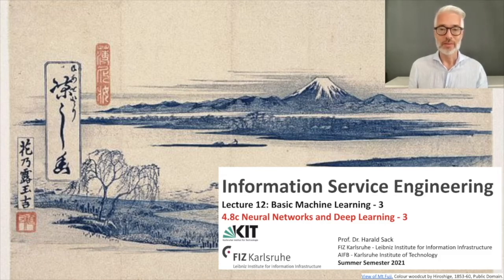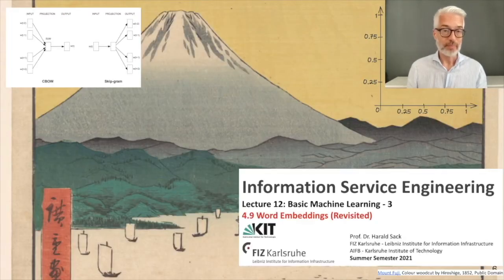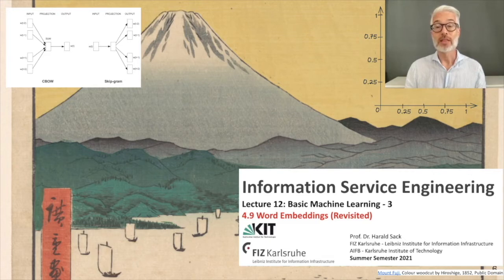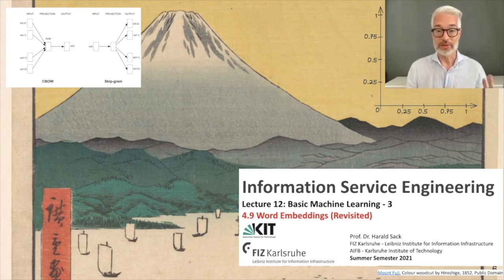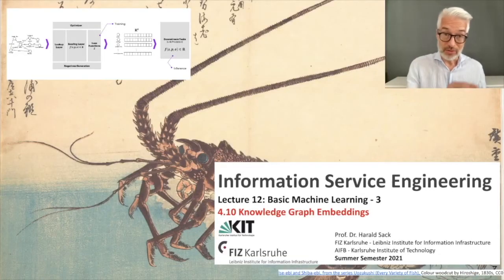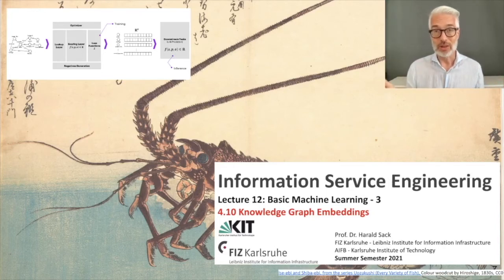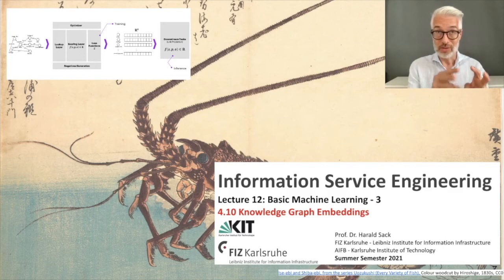We then continue with a popular application: word embedding. This is distributional semantics — already known from NLP — applied with neural networks to create dense vectors that incorporate semantics from language when trained on large language corpora. If we can do this for words in natural language, we can also try to do distributional semantics on knowledge graphs to create knowledge graph embeddings that transfer the semantics encoded in a knowledge graph.